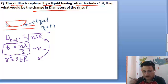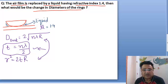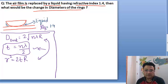Another formula is the condition: n lambda by twice. And another condition is simply n lambda t, where I'll write mu instead of n for refractive index, so mu of liquid.